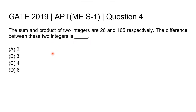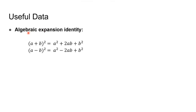This is a simple question and to answer it, we will need to use some basic algebra. We will use algebraic expansion identities. The first identity is: (a + b)² = a² + 2ab + b². The second identity is: (a - b)² = a² - 2ab + b².